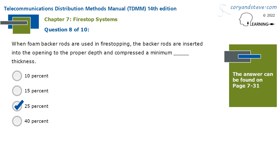When foam backer rods are used in firestopping, the backer rods are inserted into the opening to the proper depth and compressed a minimum of 25% thickness.